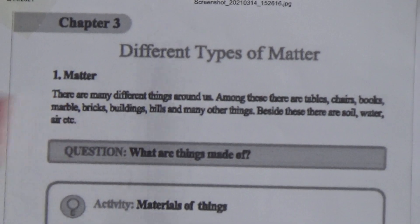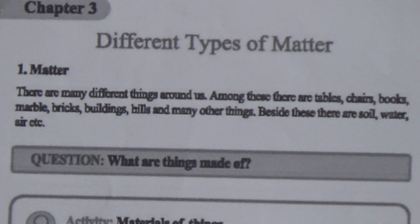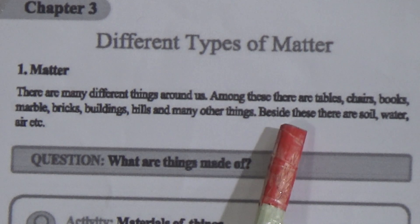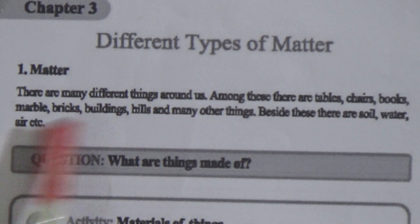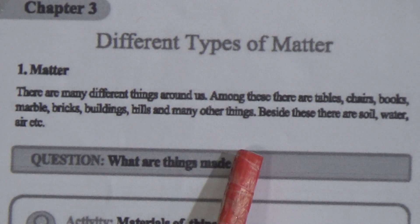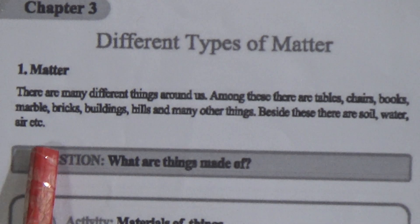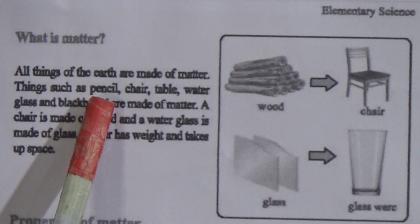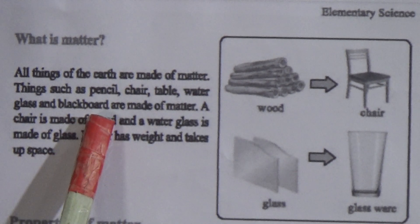Let's start our class. Chapter 3: Different Types of Matter. At first we will discuss about matter. There are many different things around us — tables, chairs, books, marble, bricks, buildings, hills, soil, water, and air. What are things made of? Now, what is matter? All things of the earth are made of matter — things such as pencil, chair, table, water, glass, and blackboard.